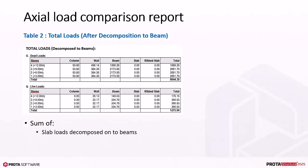Table 2 is the sum of slab loads decomposed onto beams, other applied loads on beams and member self-weights. The slab values are all 0 in this table, as the slab loads are calculated onto the supporting beams. Some of slab loads are also calculated to the walls, as the walls are also supporting some slabs.